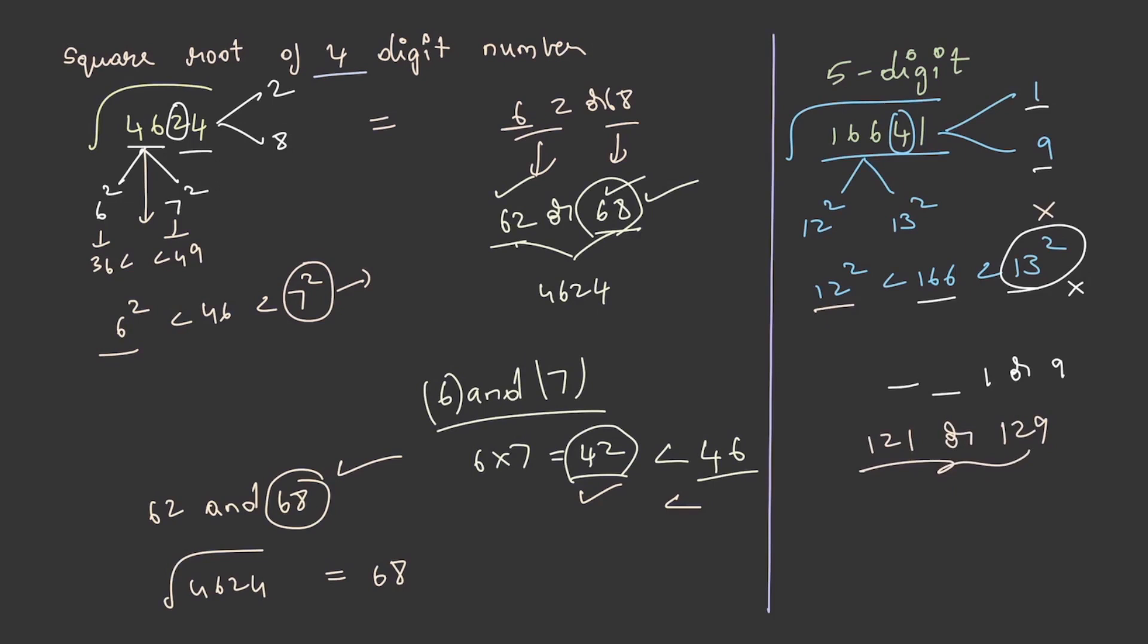Let us decide which of these is the correct option. For that, we need to take the product of 12 and 13. Product of 12 and 13 is equal to 156, and the number we have taken is 166, so it is less than 166. What if the number achieved is less than the given number? We have to take the larger number among the two options, that is 129 in this case. So, square root of 16641 is equal to 129. This is the answer.